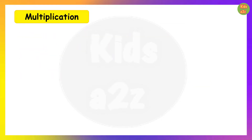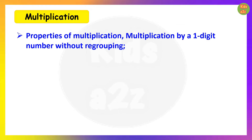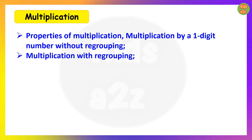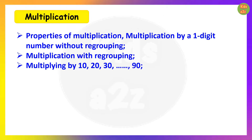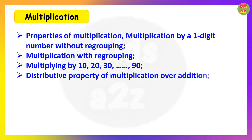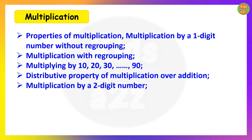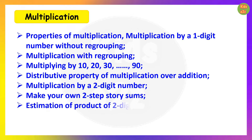The next chapter is Multiplication. Here they will learn properties of multiplication, multiplication by a one digit number without regrouping, multiplication with regrouping, multiplying by 10, 20, 30 up to 90, distributive property of multiplication over addition, multiplication by a two digit number, making their own two-step story sums, estimation of product of two digit numbers, and the lattice method of multiplication.